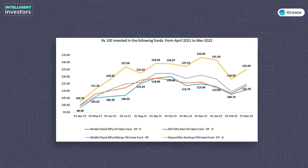We have plotted four index funds in this category to show their performance over the last one year: Motilal Oswal Nifty 50 Index Fund, DSP Next 50 Index Fund, Motilal Oswal Midcap 150 Index Fund, and Nippon Nifty Small Cap 250 Index Fund. As you can see from the chart, mid cap and small cap index funds are more volatile compared to large cap and next 50 funds.